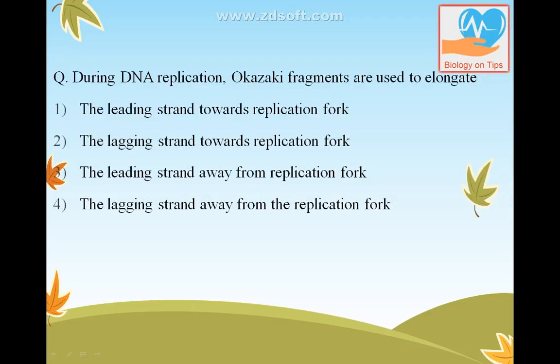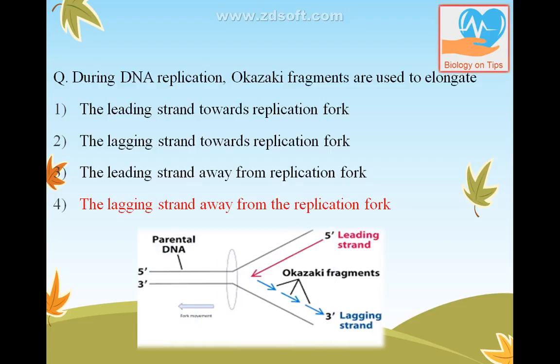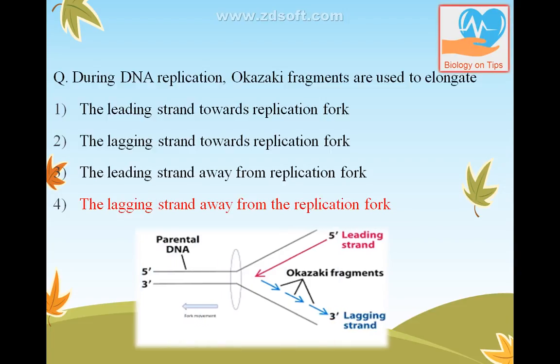During DNA replication, Okazaki fragments are used to elongate the lagging strand away from the replication fork. You can see in the diagram — there is the replication fork and these are the Okazaki fragments. They are joined together with the help of an enzyme called DNA ligase.